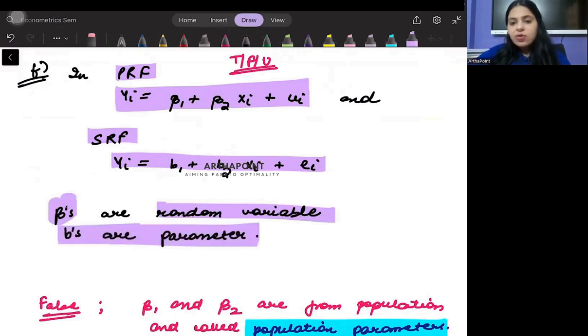Betas are random variables and bs are the parameters. So try to understand what is the difference between random variable and parameter. A random variable is anything which has a probabilistic distribution associated with it. It is anything which keeps changing its value.